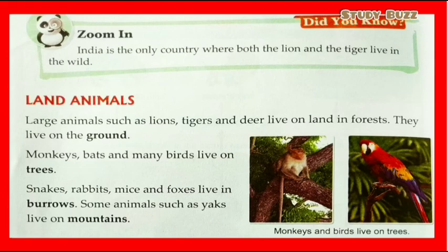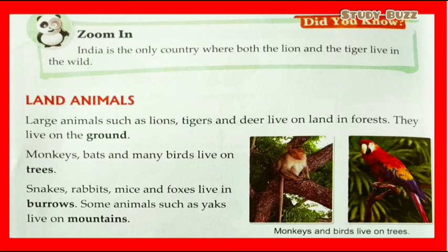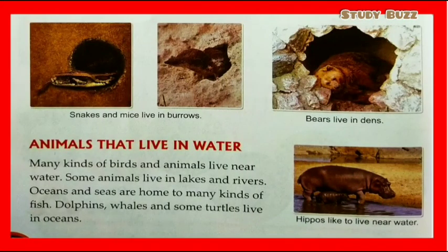Land animals: Large animals such as lions, tigers, and deer live on land in forests. Monkeys, bats, and many birds live on trees. Snakes, rabbits, mice, and foxes live in burrows. Some animals such as yaks live on mountains. In the image you can see monkeys and birds live on trees.